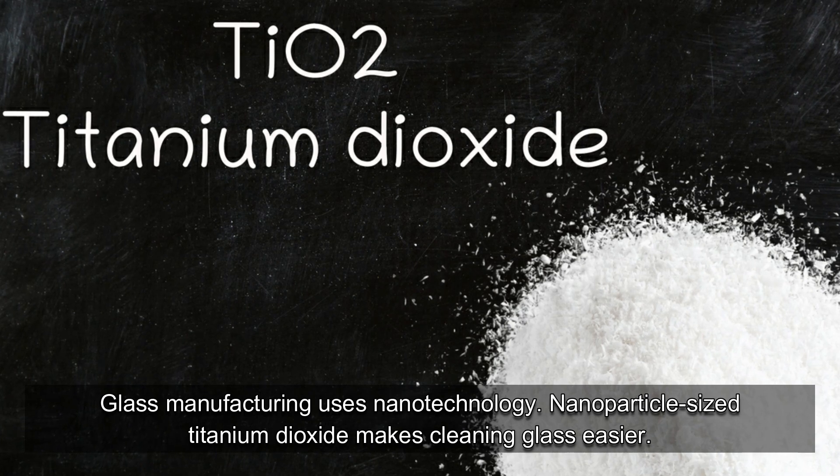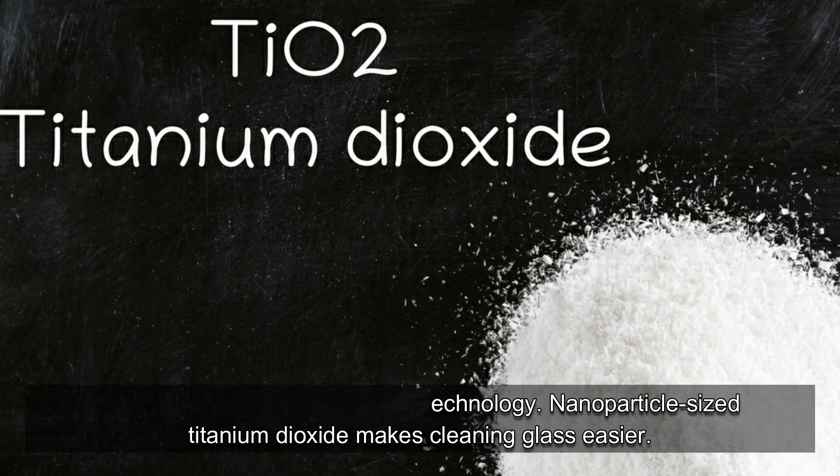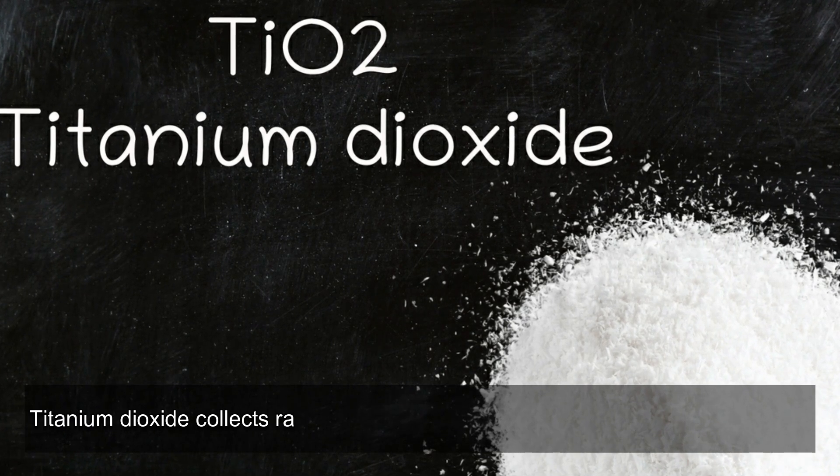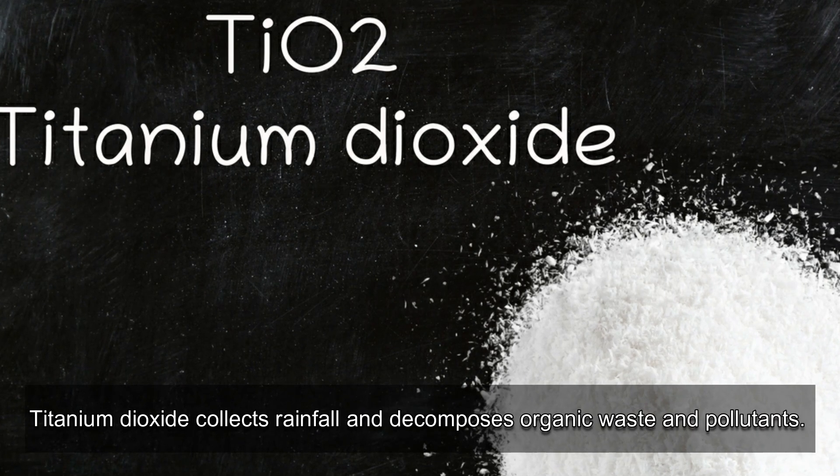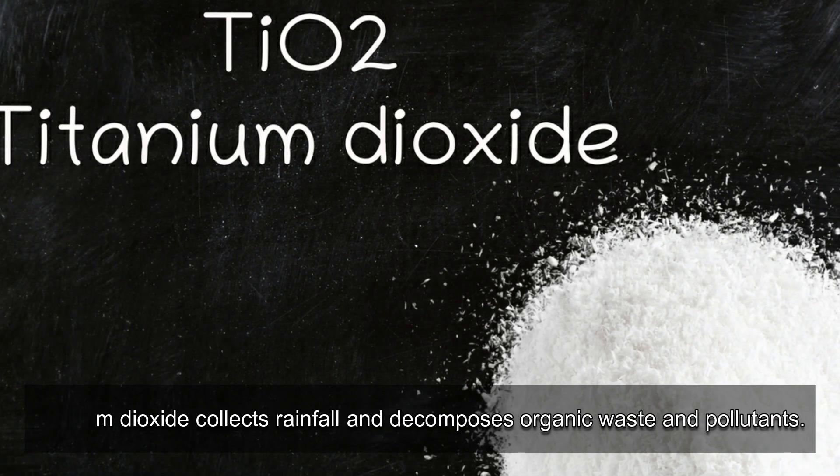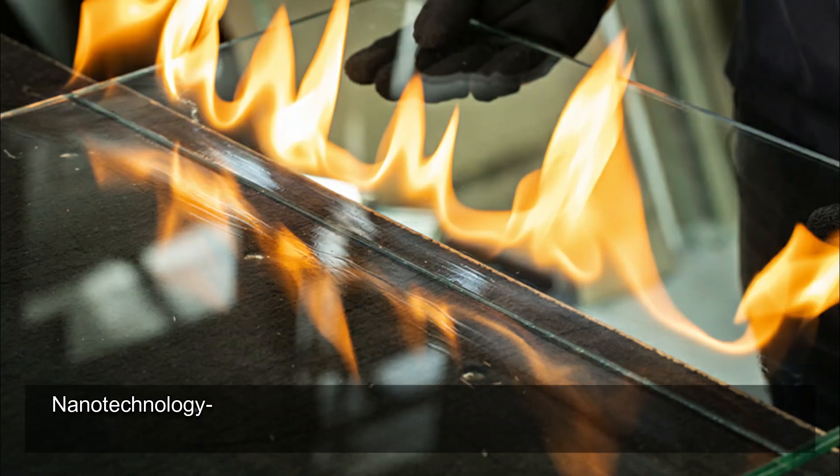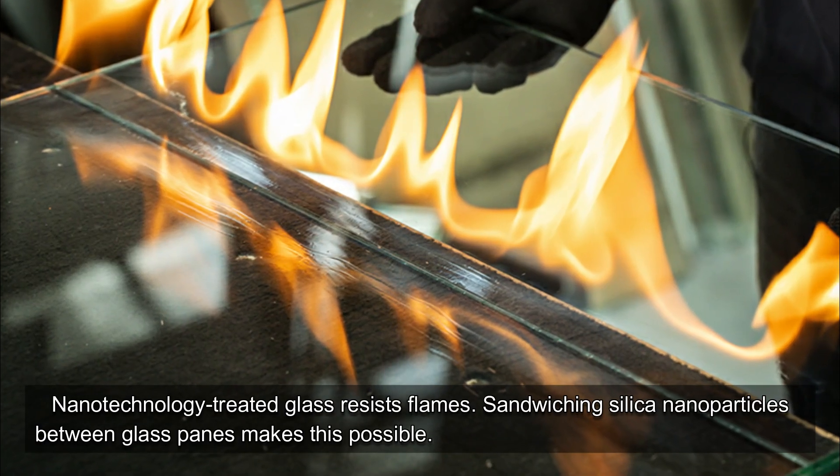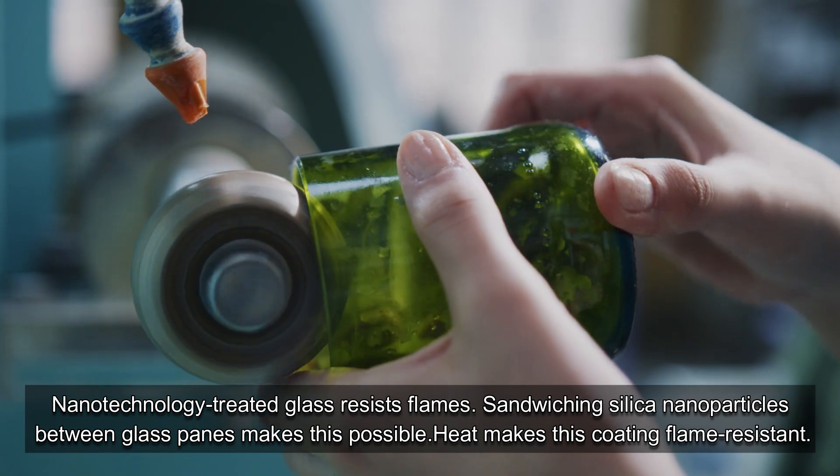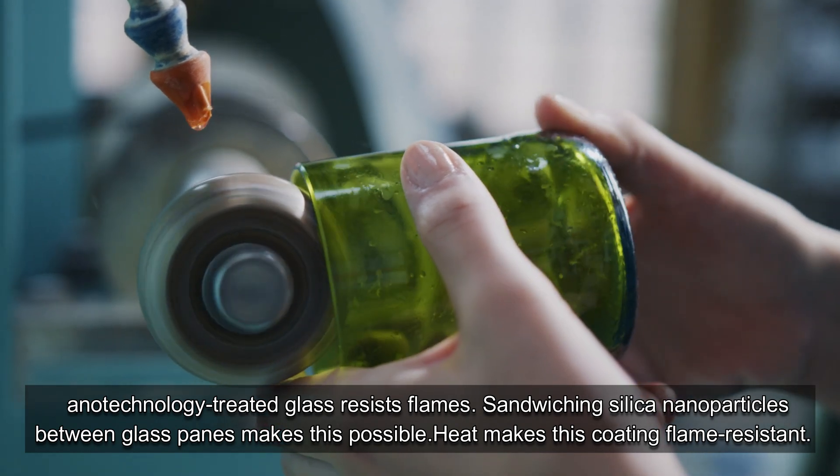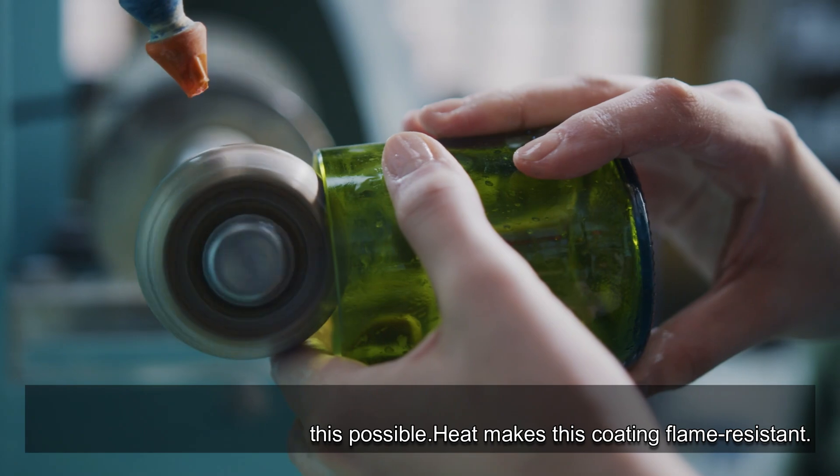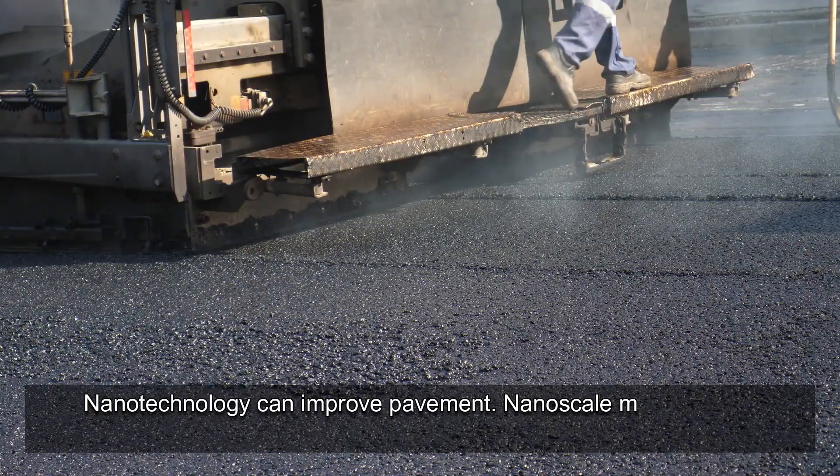Glass manufacturing uses nanotechnology. Nanoparticle-sized titanium dioxide makes cleaning glass easier. Titanium dioxide collects rainfall and decomposes organic waste and pollutants. Nanotechnology-treated glass resists flames. Sandwiching silica nanoparticles between glass panes makes this possible. Heat makes this coating flame-resistant.